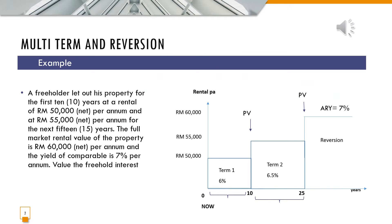Today we are going to learn on multi-term and reversion valuation. What is multi-term? Multi-term basically means multiple — more than one. In this case, it would be sometimes two terms involved and then reversion. Reversion — not revision. Reversion basically means the period where the property will be reverted back to the owner. Let's look at the example.